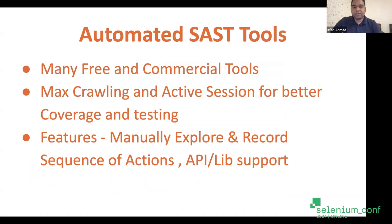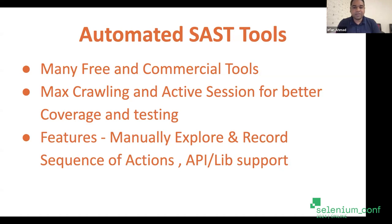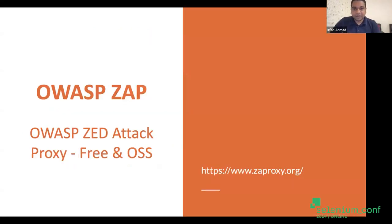We have a lot of different DAST tools - many are free and commercial. There's OWASP ZAP, Burp, and many other tools. They have similar features around crawling and active sessions. The main features are that you can manually explore URLs, record a sequence of actions, and they typically also have API and library support. One of the key DAST tools is OWASP ZAP - the Zed Attack Proxy - which is free and open source. I've given the link as well, which we'll be using in our demonstration.